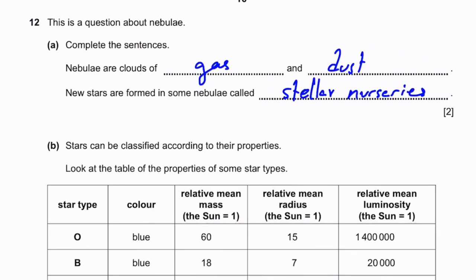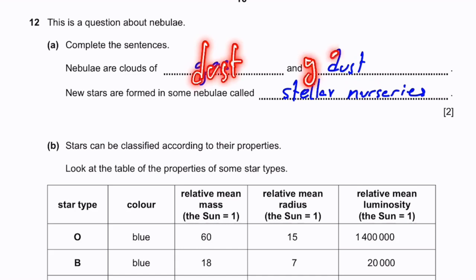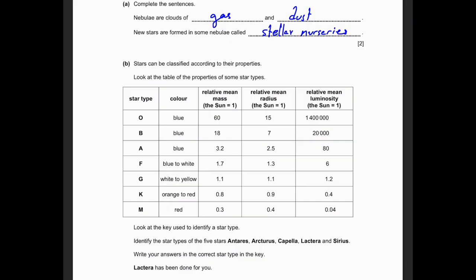Question 12 is about nebulae. Complete the sentences: nebulae are clouds of gas and dust. New stars are formed in some nebulae called stellar nurseries. Stars can be classified according to their properties.